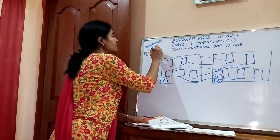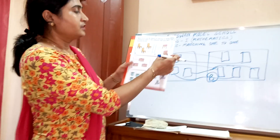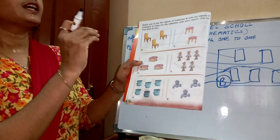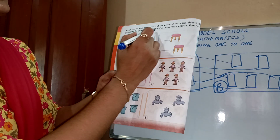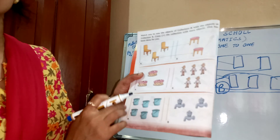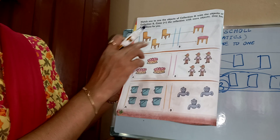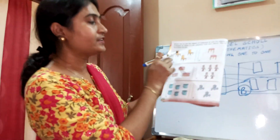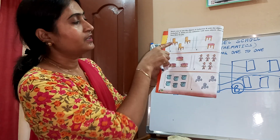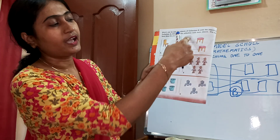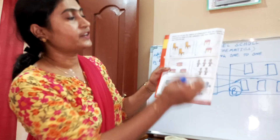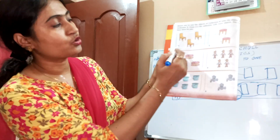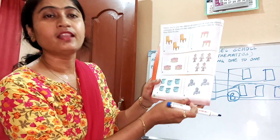Turn over the page. Here is a little bit of difference. Match one to one the objects of collection A with the objects of collection B, then cross the collection with more objects — one has been done for you. In box A there are three chairs and in box B there are two stools. One chair, one stool; one chair, one stool; but one chair is more. So which box is more? A. Cross A — it has been done in your book.